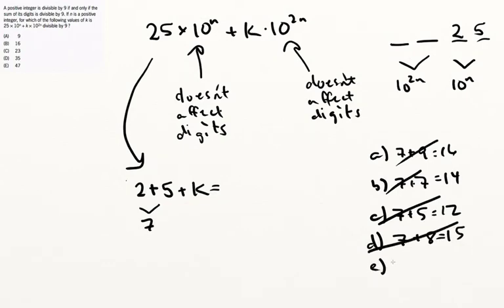And by elimination, we're left with E. But check this, 7 plus 11 is 18. So E has to be the answer. So it ends up being 2 plus 5 plus 4 plus 7 yields 18. And we know that that total number is, of course, divisible by 9.